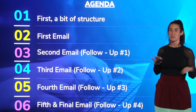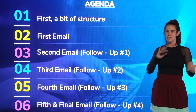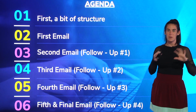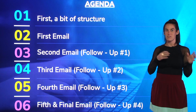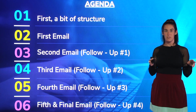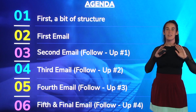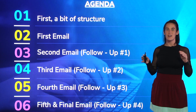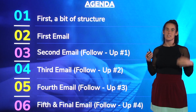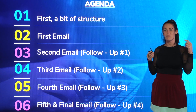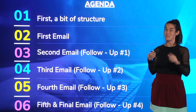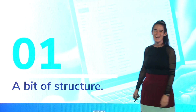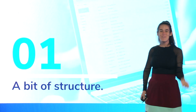That structure covers the kind of sequences you'll be running and a little build-up going into the first email. Section two will cover the first email. Section three covers the second email, which is follow-up email number one, and so on and so forth through four, five, and six — which are emails three, four, and five — follow-ups two, three, and four. Got it? Let's go.